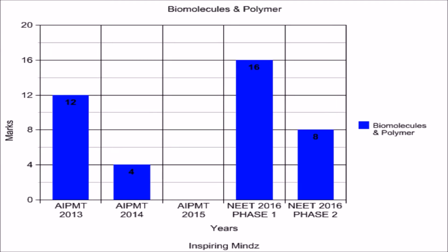The second very important chapter according to marks distribution is Biomolecules and Polymers. In AIPMT 2013, 12 marks of questions were asked from this chapter, while in AIPMT 2014 the weightage was 4 marks. In AIPMT 2015 no questions were asked. In NEET 2016 phase 1 the weightage was 16 marks, while in NEET 2016 phase 2 the weightage was 8 marks.